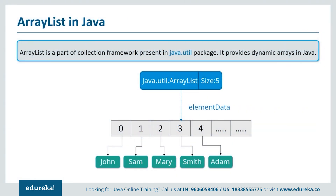Now let's see what ArrayList is. ArrayList is a part of the collections framework and is the implementation of the List interface, where elements can be dynamically added or removed from the list. Also, the size of the list increases dynamically if elements are added beyond the initial size. Though it may be slower than standard arrays, it can be very helpful in programs where lots of manipulation in the array is required.